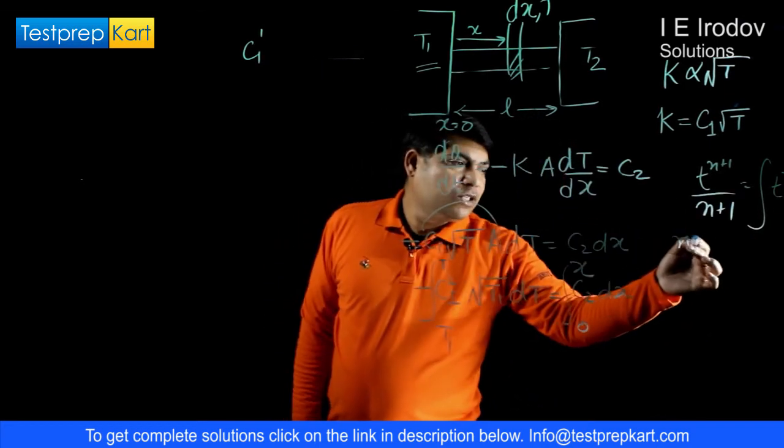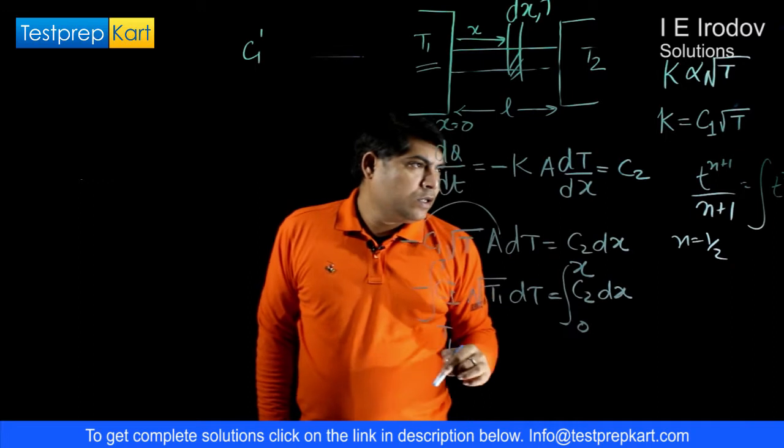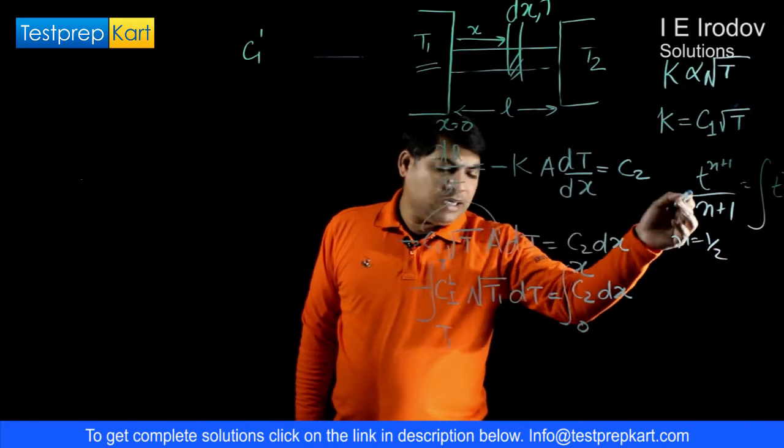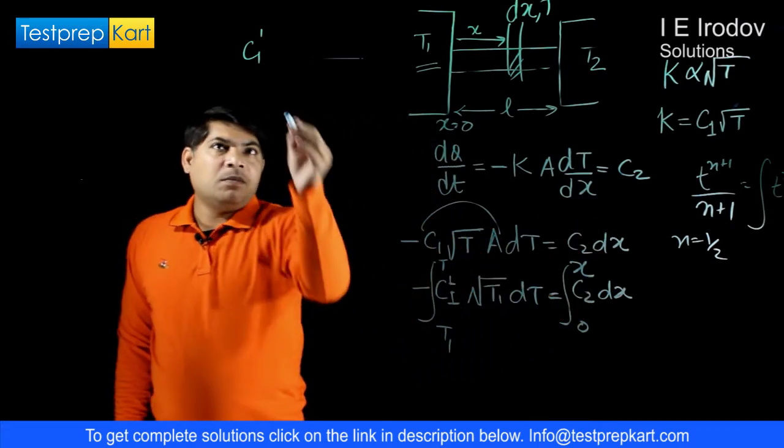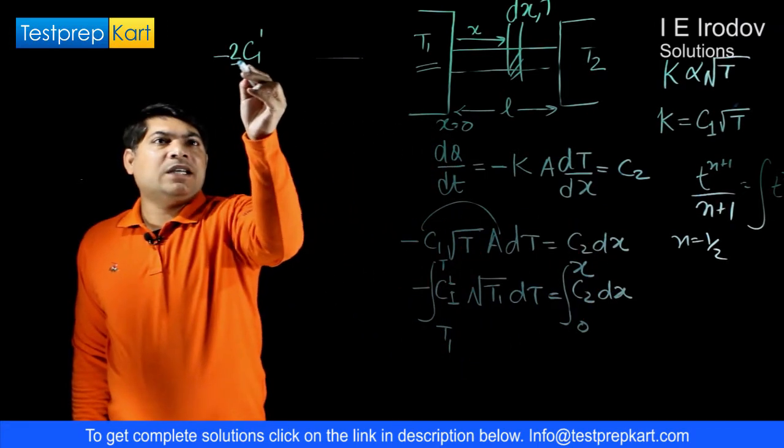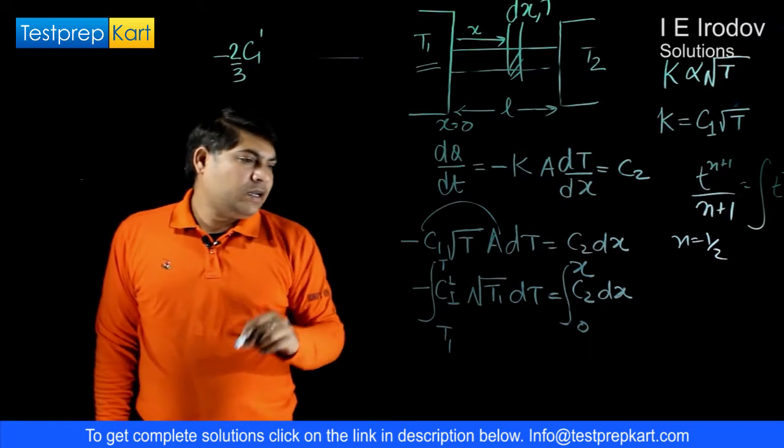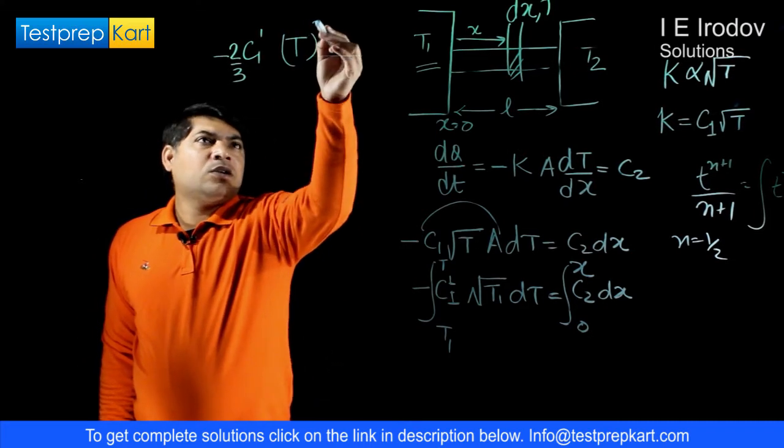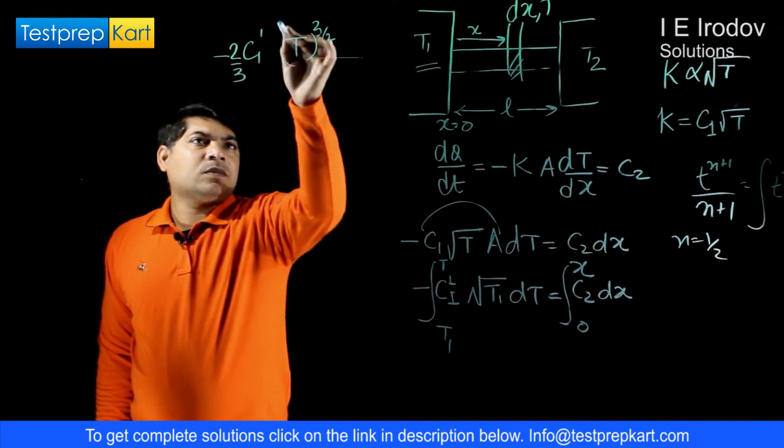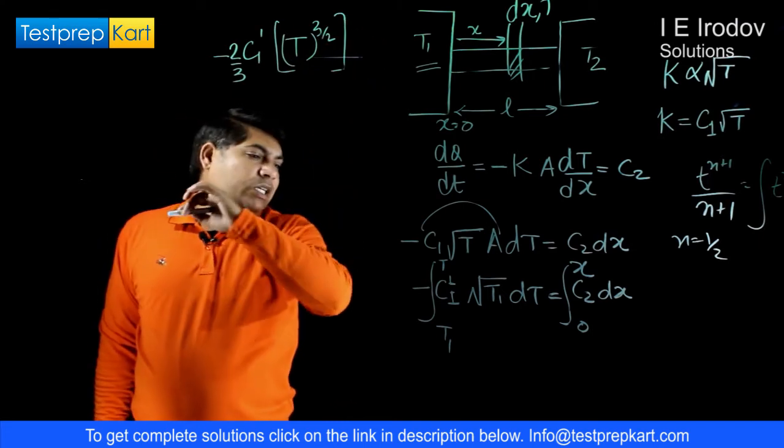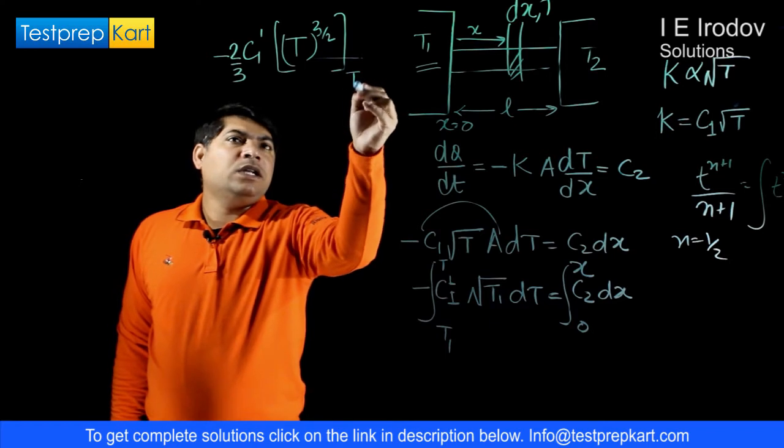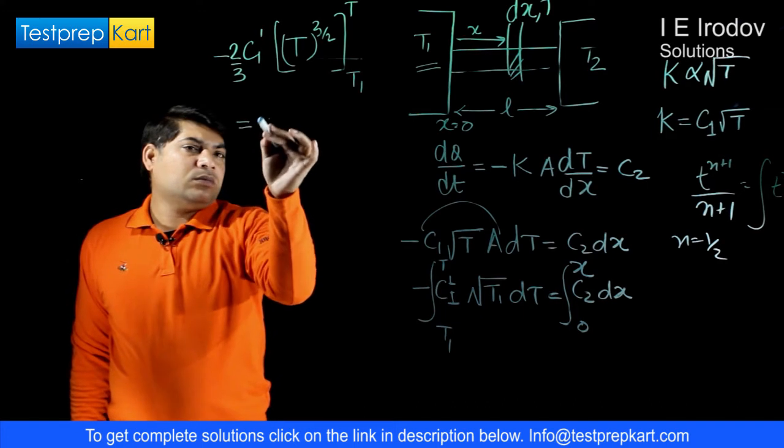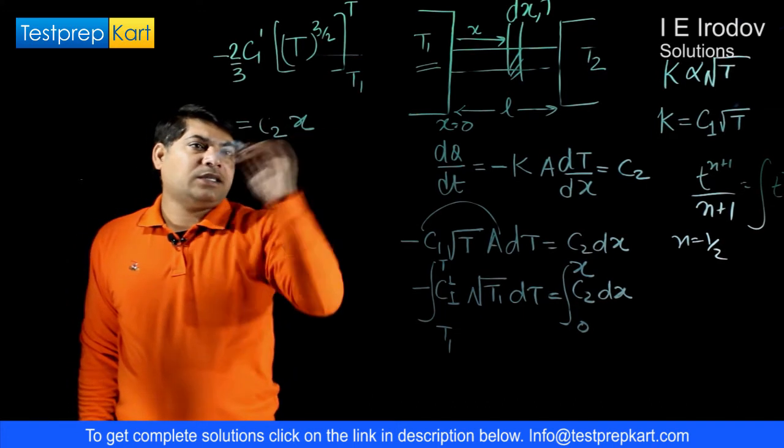Here n is equals to 1 by 2. N plus 1 by 2, so n plus 1 is 3 by 2, it is in denominator. We can write minus 2 by 3 C1 into T to power 3 by 2 and limit is changing from T1 to T. This is equals to C2 into x.